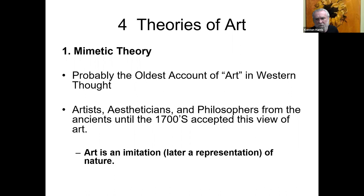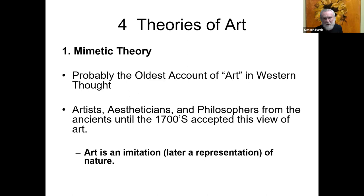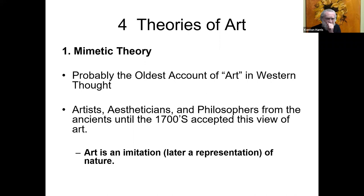We'll start with mimetic theory, probably the oldest account of art in Western thought. Artists, estheticians, and philosophers from the ancients up till about the 1700s all pretty much accepted this as the account of what the nature of art is. A lot of art was produced with this theory in mind. So essentially it's the idea that art is an imitation of nature — and later, art is a representation or re-presentation of nature. Those turn out not to be exactly the same thing.